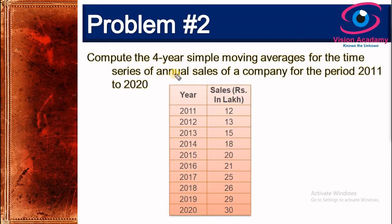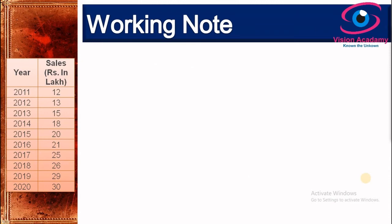Now I will solve one more problem using simple moving average method. In this problem I am going to solve a four years simple moving average, which is slightly different from three years. The data is a time series of sales volume of a company for the period 2011 to 2020. For the first value we consider four values: 12, 13, 15, and 18.